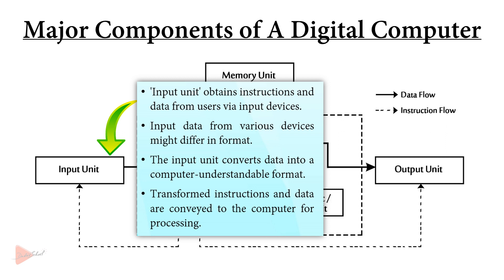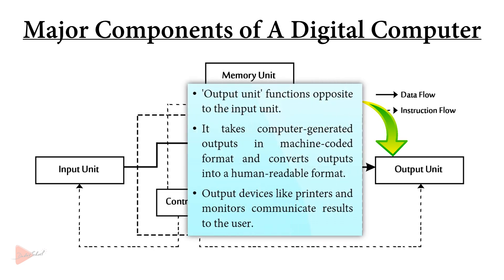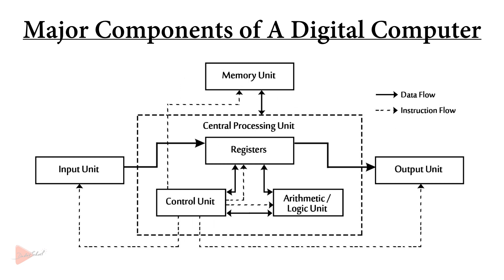As data and instructions from different input devices may vary in format, the input unit transforms them into a compatible form that the computer can understand. The output unit takes the computer-generated outputs, which are in machine-coded format, and transforms them into a format understandable to the user. These converted results are then conveyed to the user through output devices like printers, monitors, and plotters.